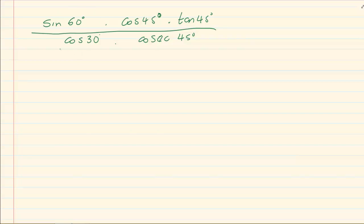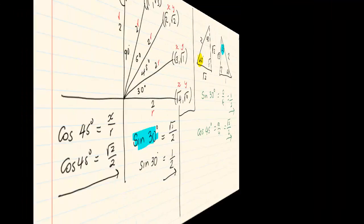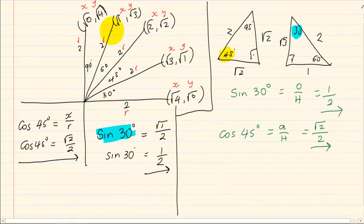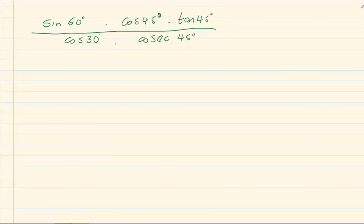Now sin 60 means I go and I look at the 60 degree line and I know it's Y over R. So it's root of 3 over 2. So I've got root of 3 over 2 times.